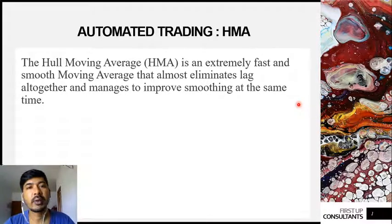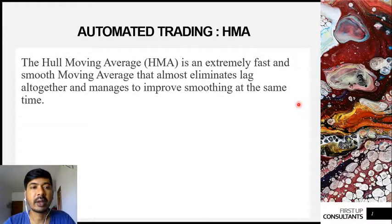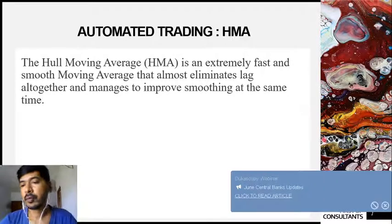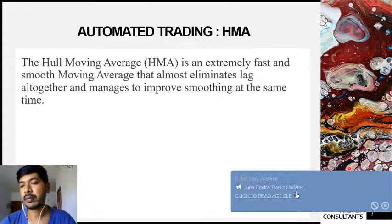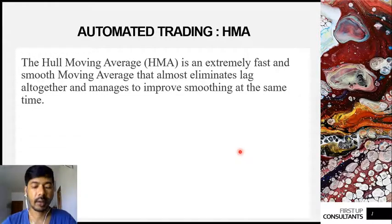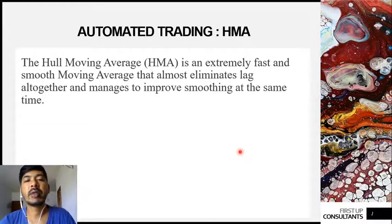In today's session of automated trading, we will be starting up fresh with the Hull Moving Average, which is a very fast and smooth moving average. It keeps up with the price action with very little lag in catching up, making it pretty useful for getting involved during the initial hours of a trend change. We will utilize this HMA — the Hull Moving Average — for deciding when to enter and when to exit, and to determine the trend as well.